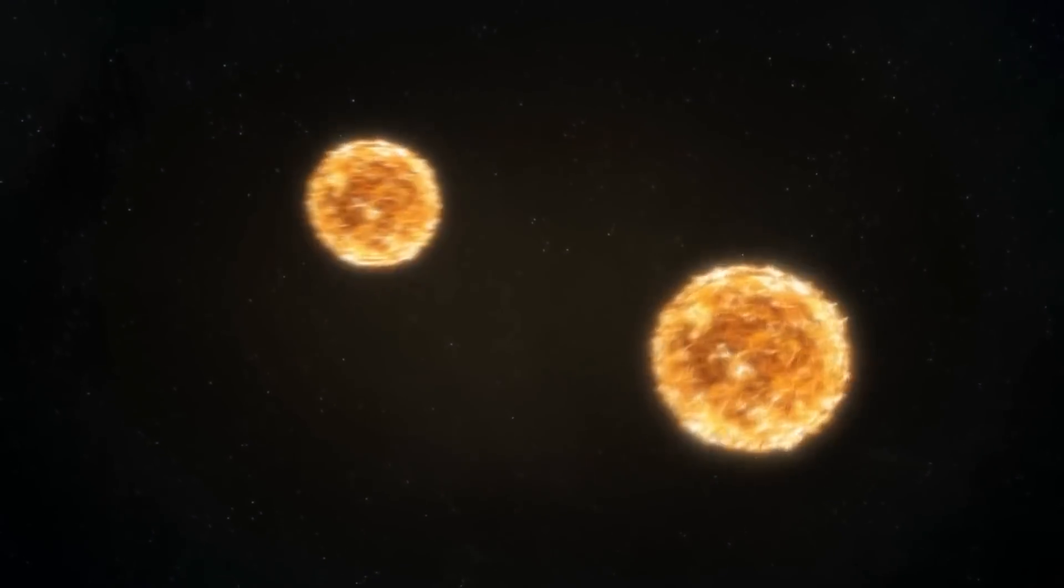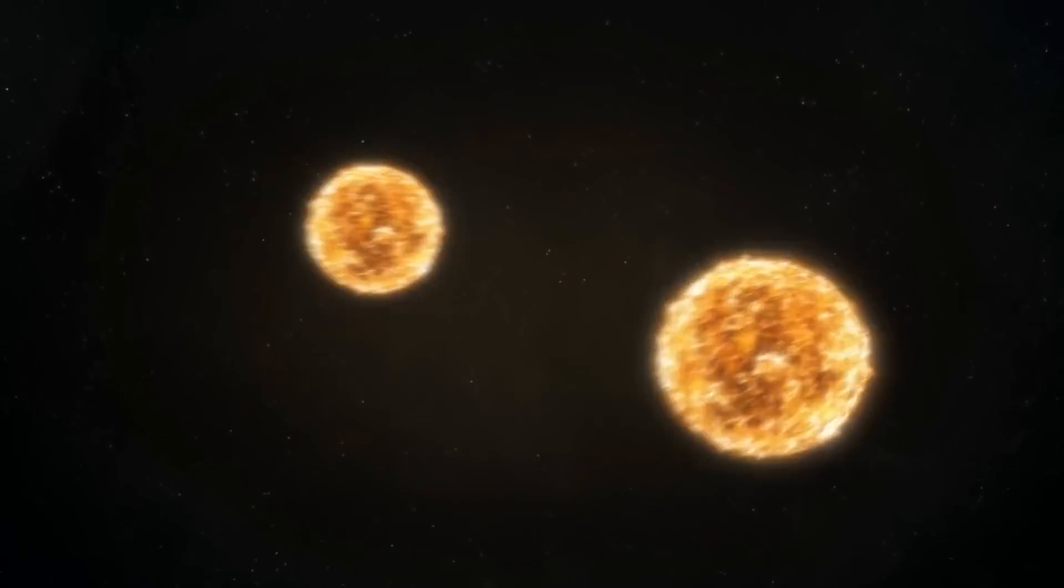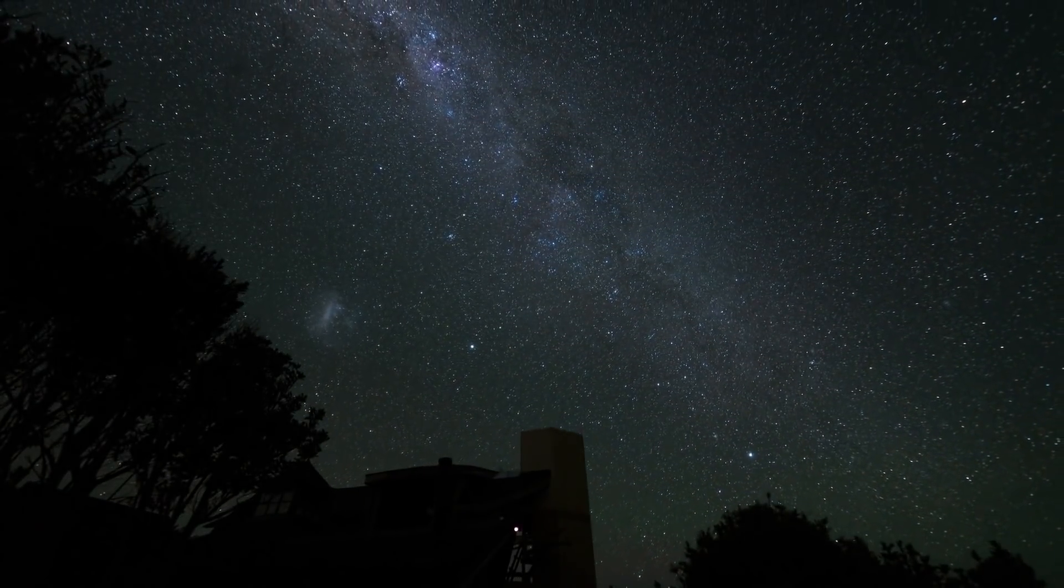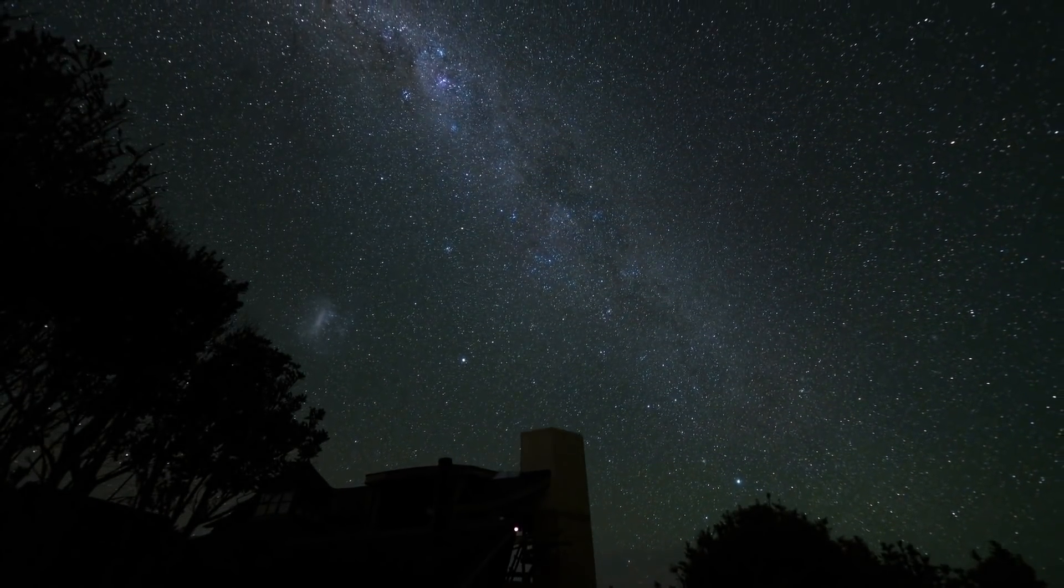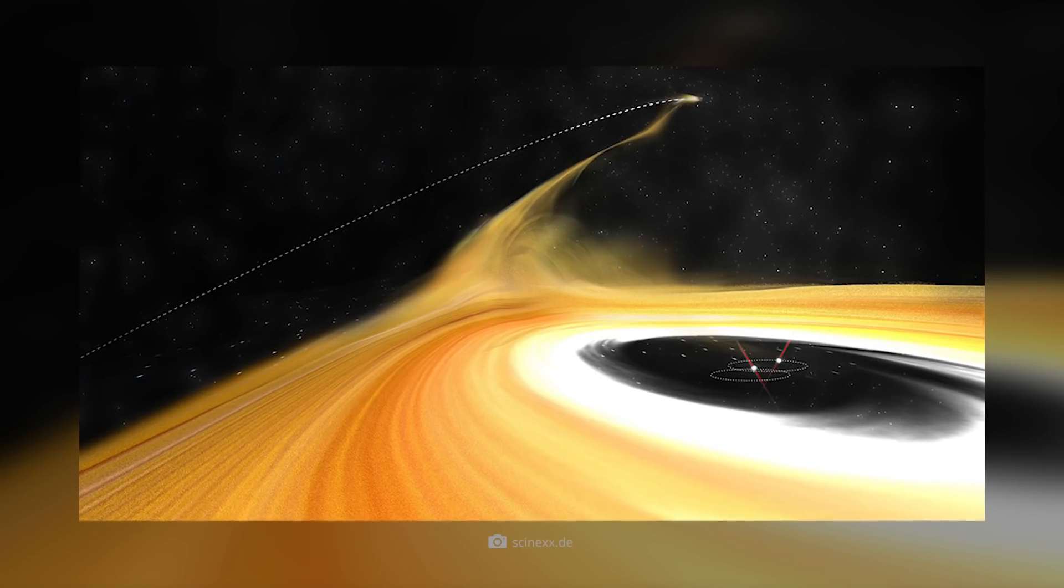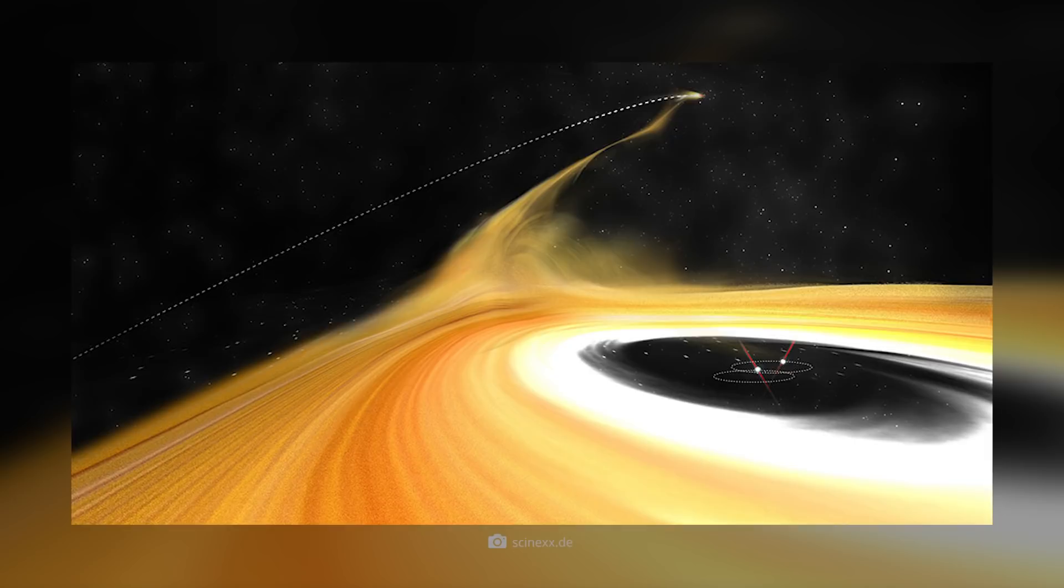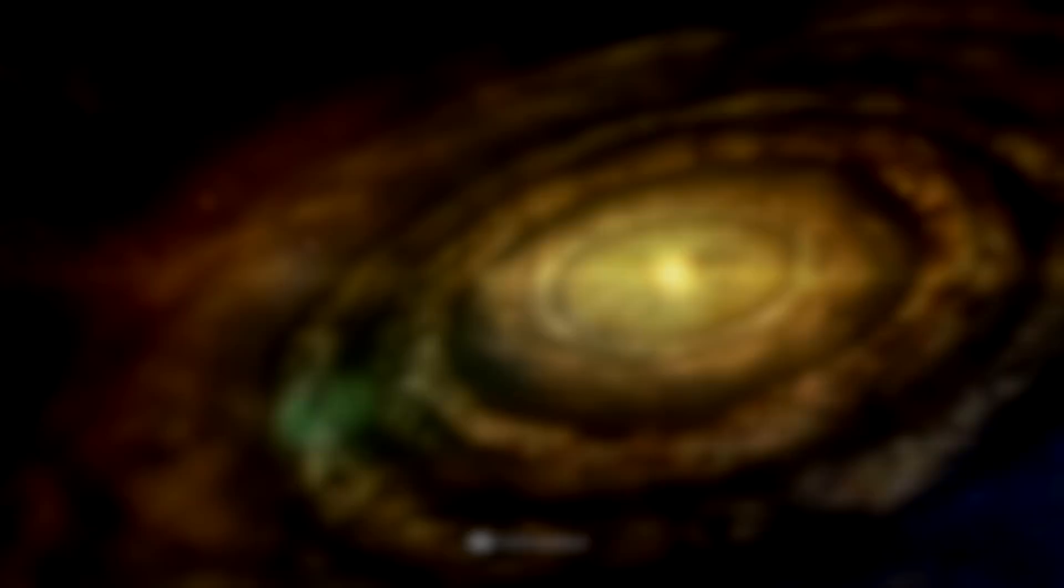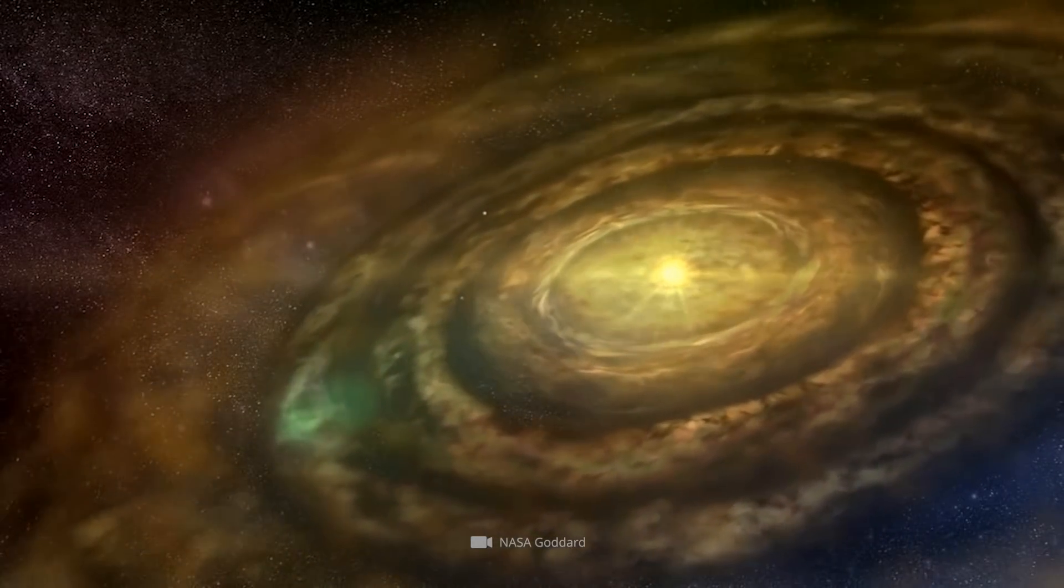The double star system, which the astronomers took thereby in view, bears the name Z Canis Majoris and is approximately 3,750 light-years far away from our homeland planet. The special feature is that the system in question is still very young, with an age of 1 million years, and is still surrounded by a protoplanetary disk.